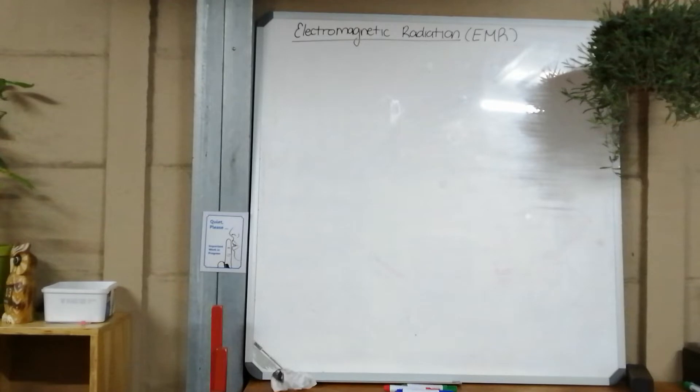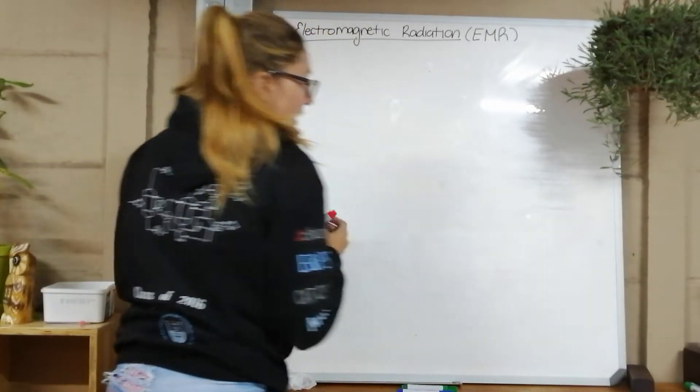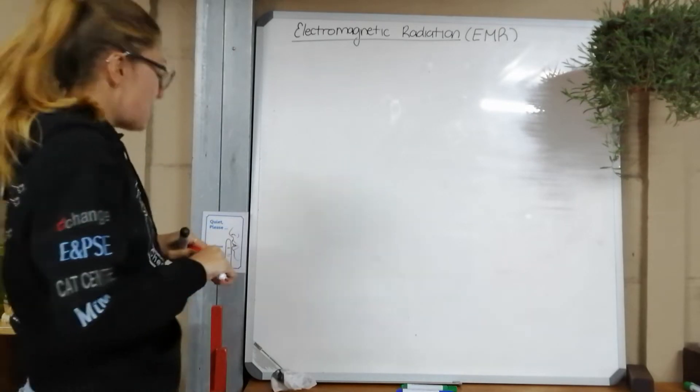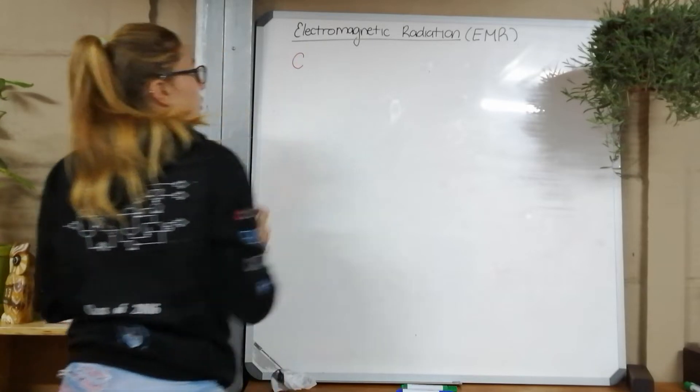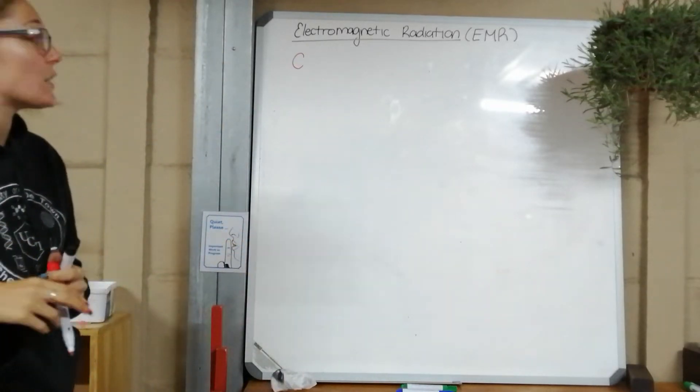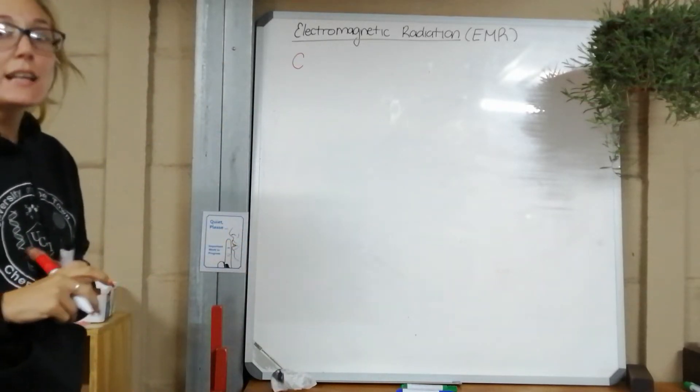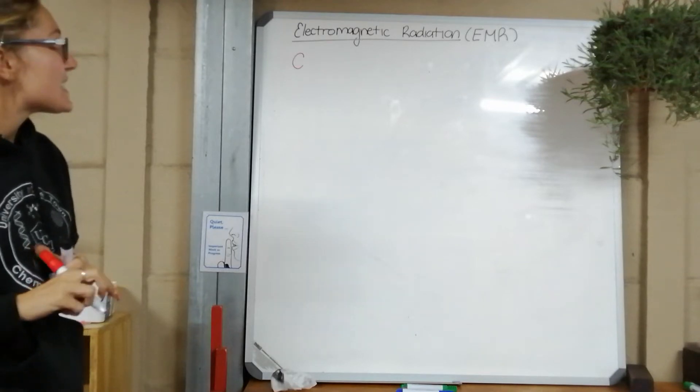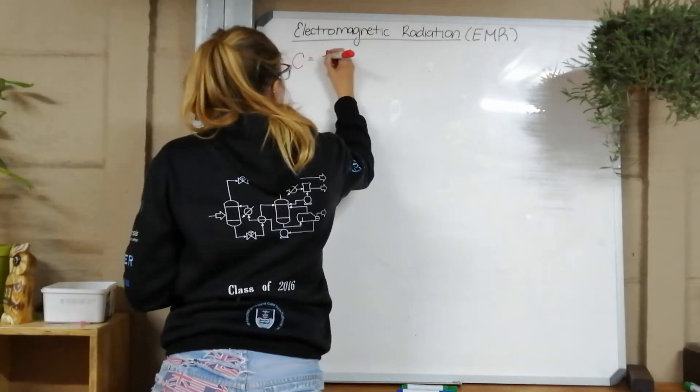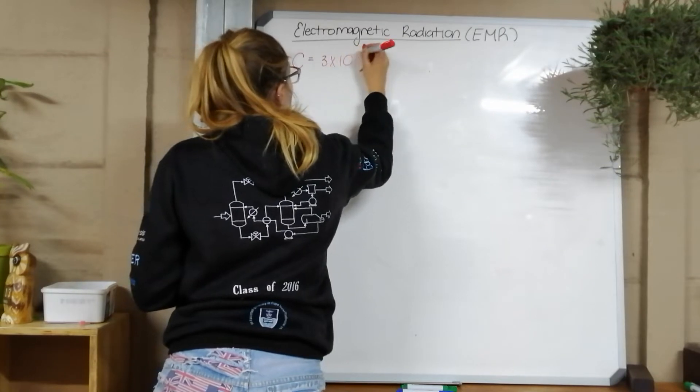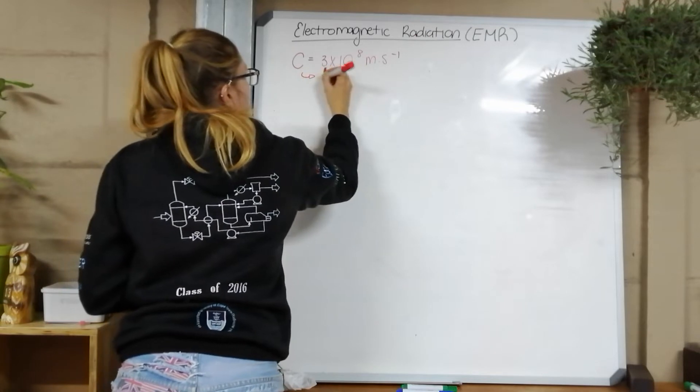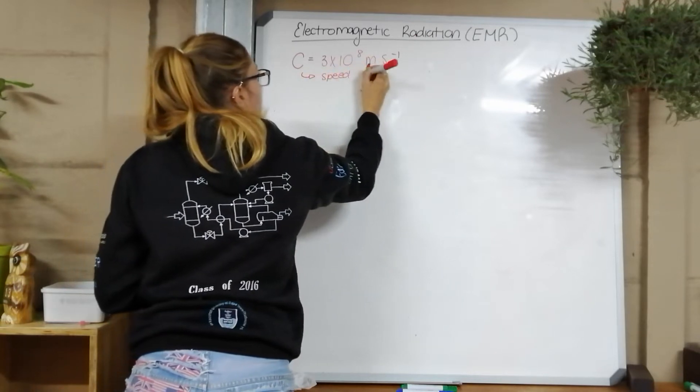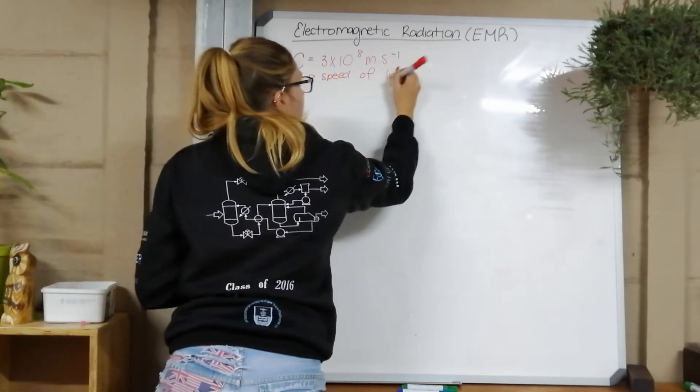And then the third thing, this one is very important for our calculations, is that all electromagnetic radiation moves at the same speed, and that speed is denoted by the letter C. This is not going to be your first constant that you have to know in physics. It will be on your data sheet. Get comfortable with it please. That's C is equal to 3 times 10 to the 8 meters per second, and this is the speed of light in a vacuum.